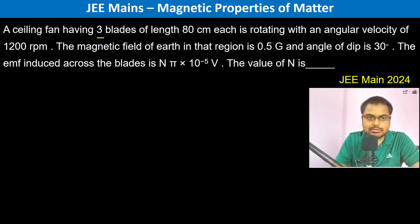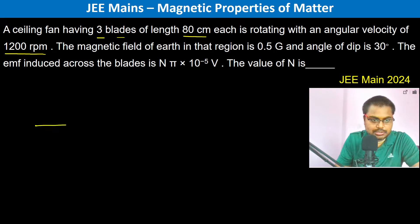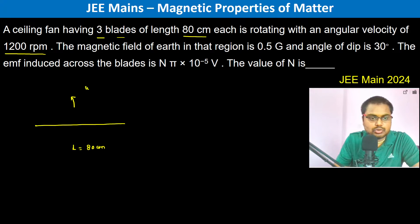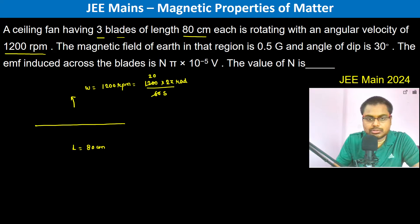A ceiling fan having three blades, each of length 80 centimeters, is rotating with an angular velocity of 1200 rpm. This is the ceiling fan blade with length 80 cm. So omega is equal to 1200 rpm, which is 1200 into 2 pi radians divided by 60 seconds. This becomes 40 pi radians per second.